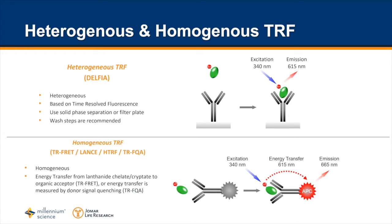As a quick refresh, homogeneous assays are non-wash TRF assays, also known as mix and measure. In this context, the partner is an antibody conjugated to a fluorescent acceptor. So you have a lanthanide donor and a fluorescent acceptor. The lanthanide donor docks onto the partner antibody, you then excite the lanthanide.